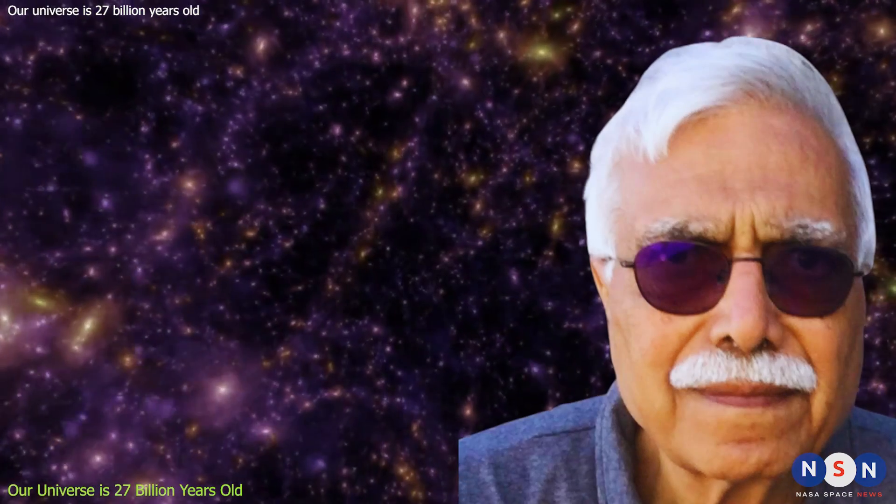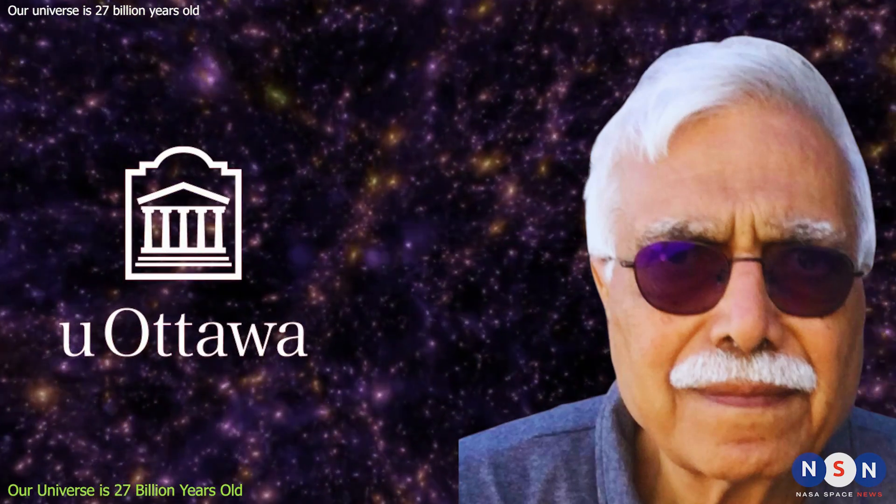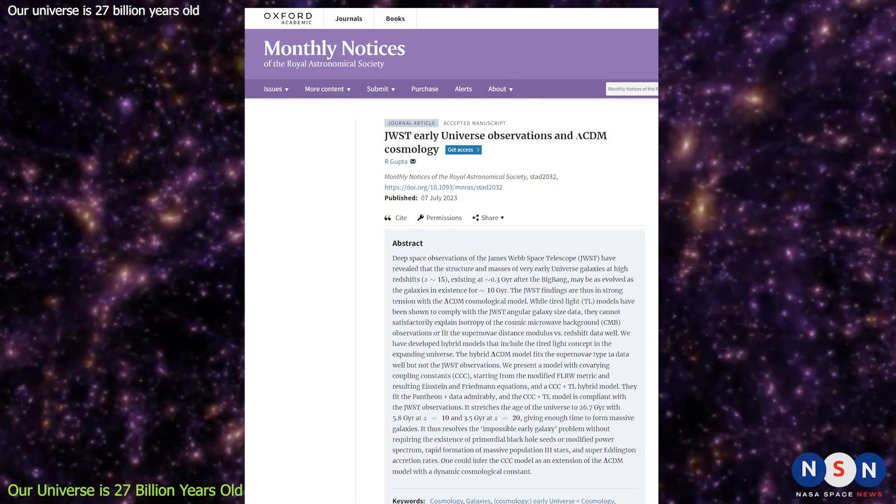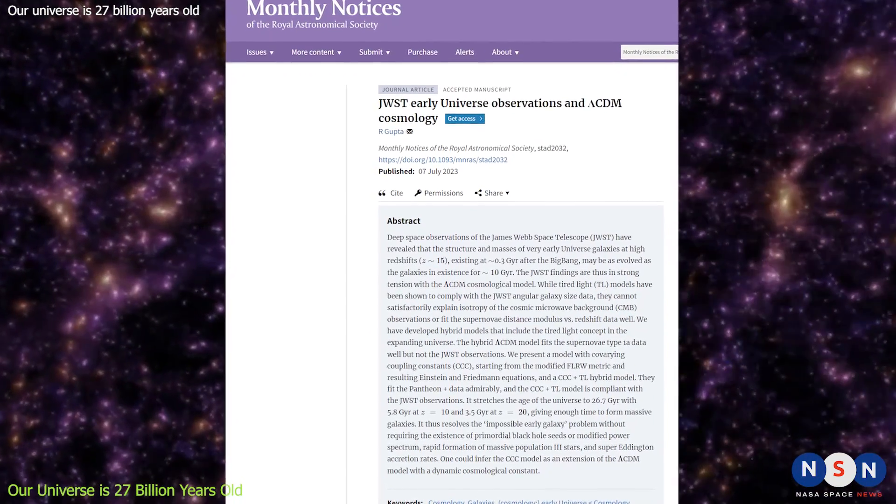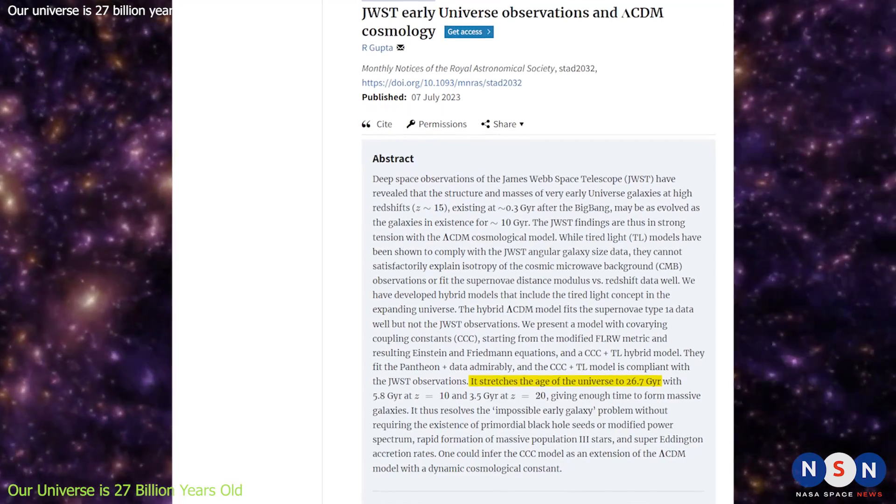This is exactly what a new study by Rajendra Gupta, a physicist from the University of Ottawa, proposes. In his paper published in Physical Review D in November 2021, Gupta claims that our universe is not 13.8 billion years old, but 27 billion years old.